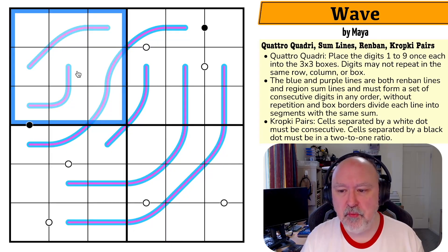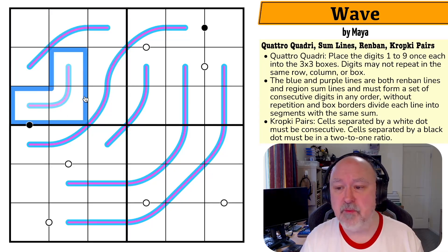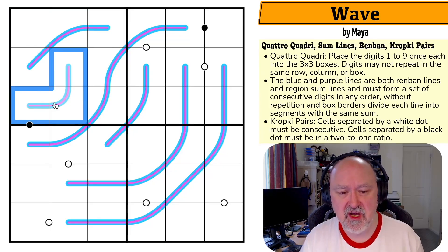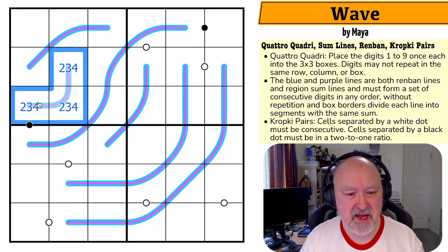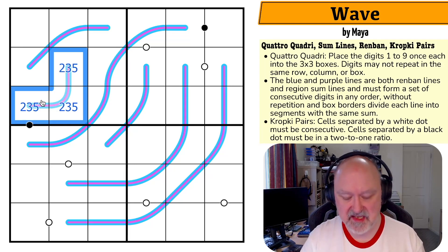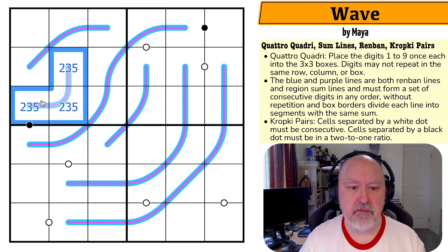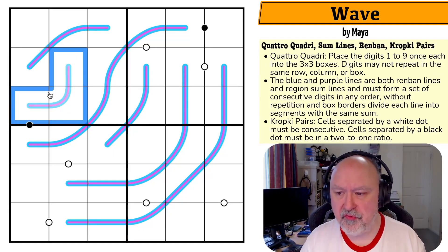Quattro Quadri is a bit weird that way, because you can't use normal Sudoku logic. We can't turn around and say what digit are we missing from a row or column - we can from a box, but not from a row or column.